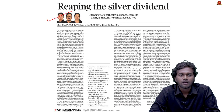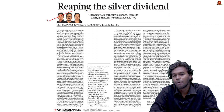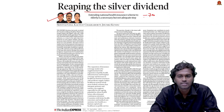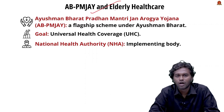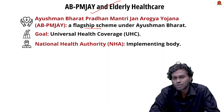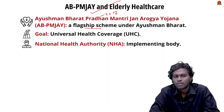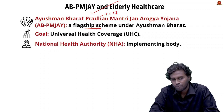Now, let's move to the second article: 'Reaping the Silver Dividend.' This article discusses the expansion of Pradhan Mantri Jan Arogya Yojana, an insurance scheme that now provides coverage to the elderly population above the age of 70. This is a milestone step for elderly welfare in India. PM-JAY is a flagship scheme launched under the recommendation of the National Health Policy, aiming for universal health coverage through holistic intervention in primary, secondary, and tertiary health systems.